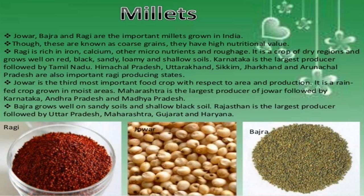Jowar, Bajra and Ragi are the important millets grown in India. Though these are known as coarse grains, they have high nutritional value. Ragi is rich in iron, calcium, other micronutrients and roughage. It is a crop of dry regions and grows well on red, black, sandy, loamy and shallow soil. Karnataka is the largest producer of Ragi, followed by Tamil Nadu, Himachal Pradesh, Uttarakhand, Sikkim, Jharkhand and Arunachal Pradesh.